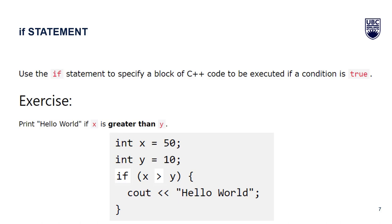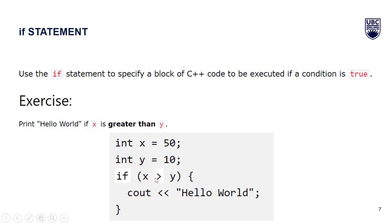Let's understand the if statement through this example. We want to print 'hello world' if the value of variable x is greater than variable y. We are given x equals 50 and y equals 10, so we write: if x is greater than y, open the bracket, write cout 'hello world', then close the bracket. Since x is 50 and y is 10, x is greater than y, so the condition is true and the compiler will print 'hello world' on the screen.